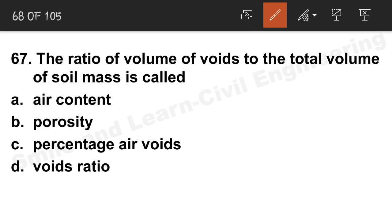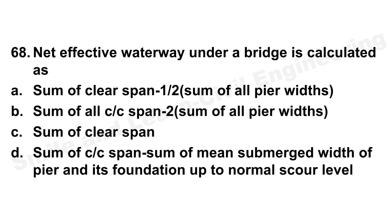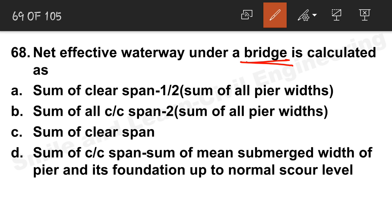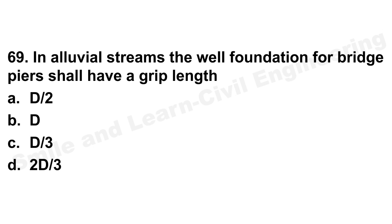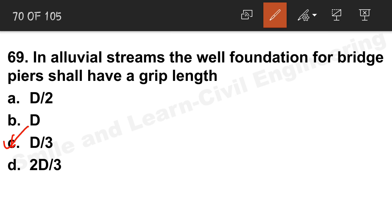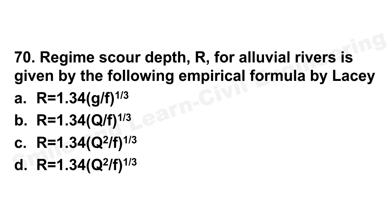Question 68: Net effective waterway under a bridge — this is from bridge or irrigation engineering and I have no idea regarding this question. If you know the answer, please comment. Question 69: In alluvial streams, the well foundation for a bridge pier shall have a grip length of D/3. Option C is the correct answer.